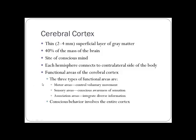Within the cortex there are three types of areas: motor areas, which control voluntary movement; sensory areas, which control awareness of sensation and interaction with the environment; and association areas, which connect sensory to motor areas, sensory to sensory, and motor to motor — essentially connecting everything together.